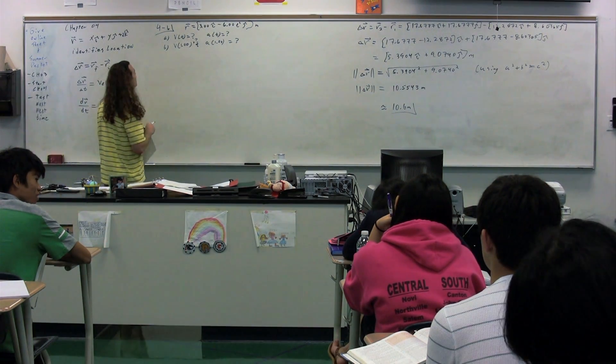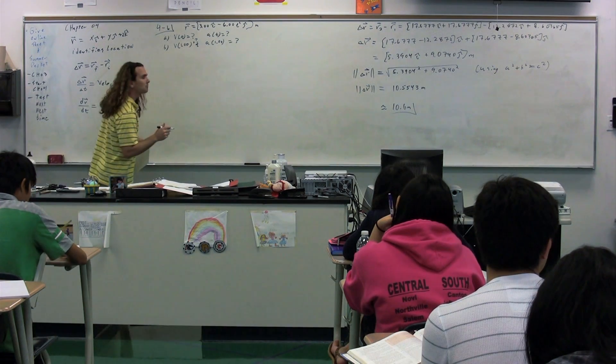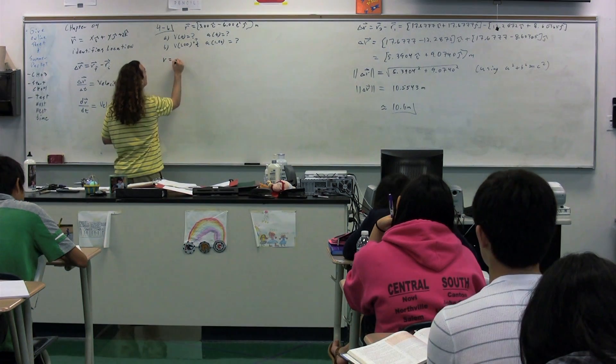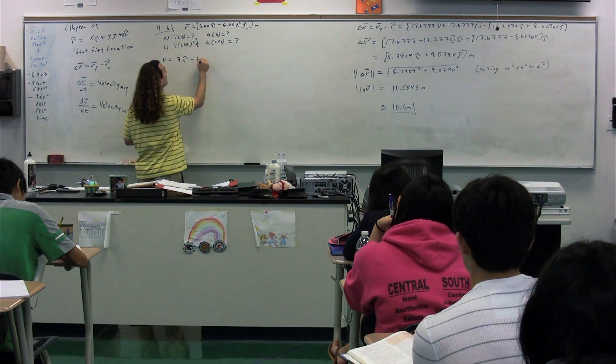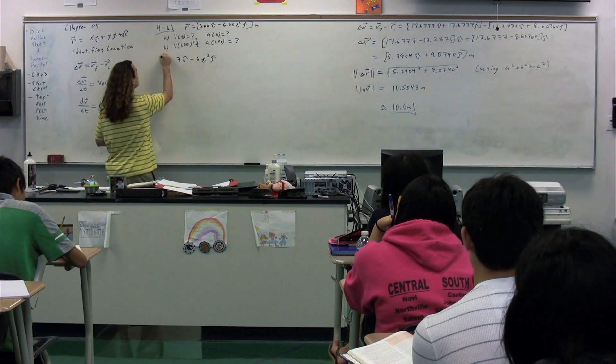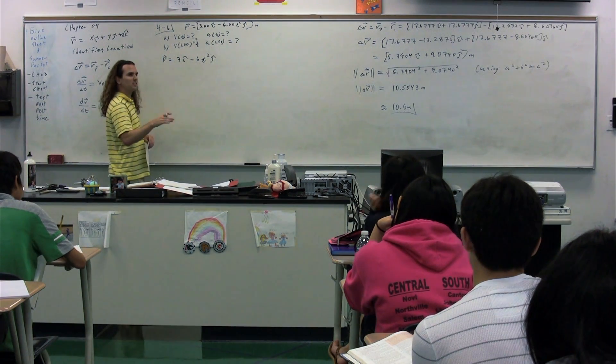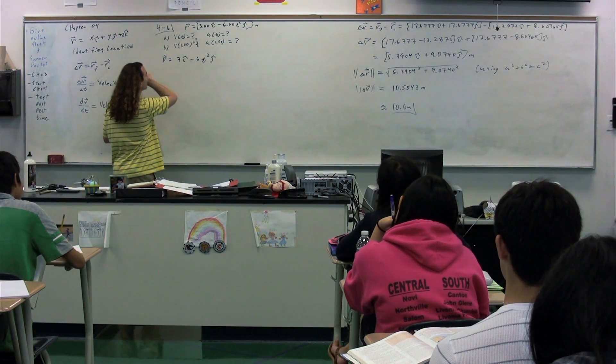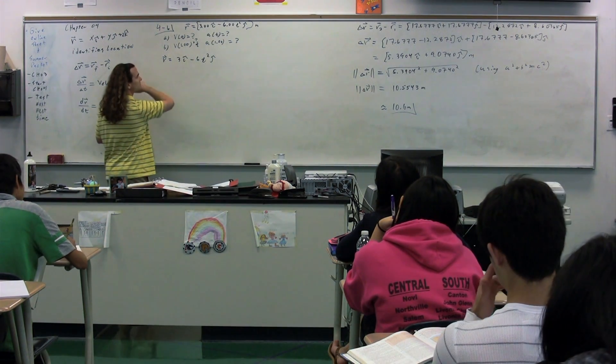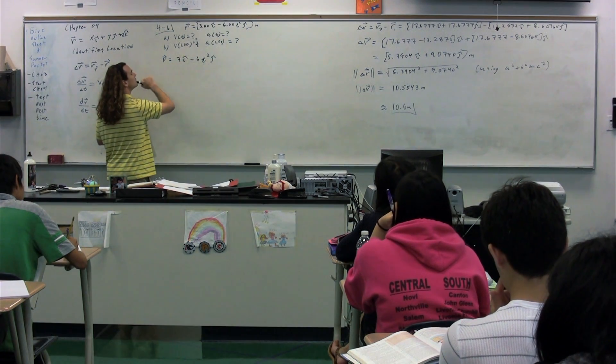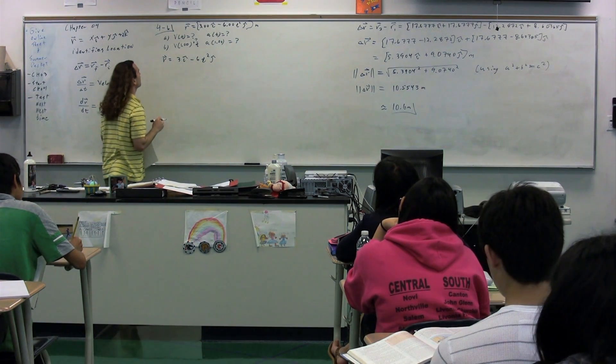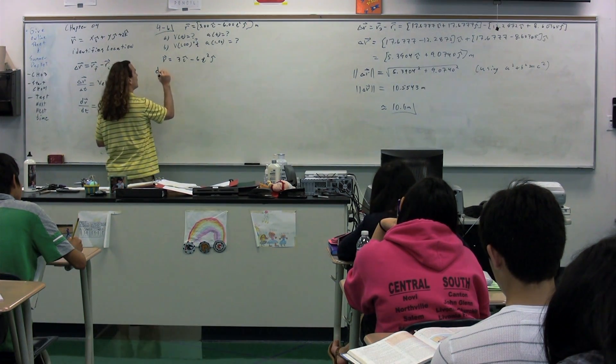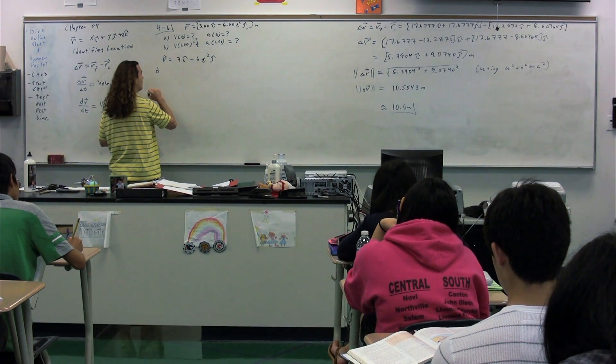Minji, how do we figure out the velocity as a function of time? So first of all, you have to write down the expression, which is r equals 3.0 i minus 6.0 t squared j, and then I'm guessing that you have to do the thing where you're like, shh, don't guess. So you have to find a derivative of what?